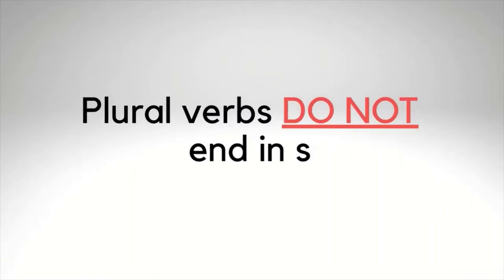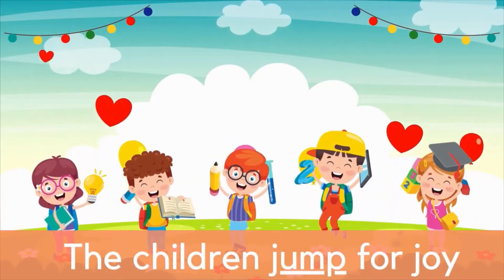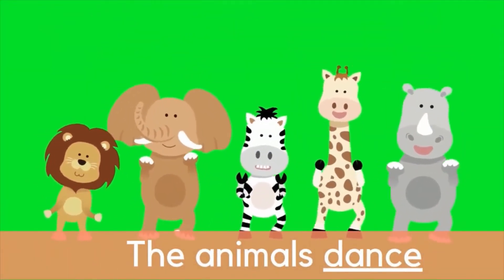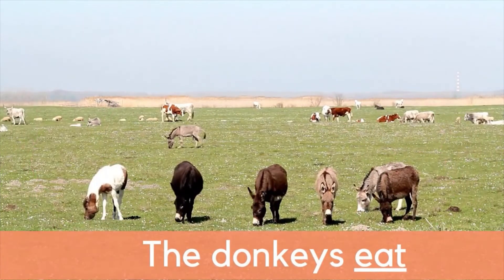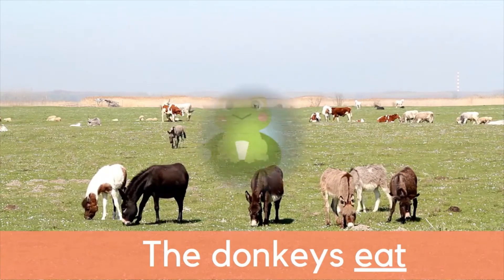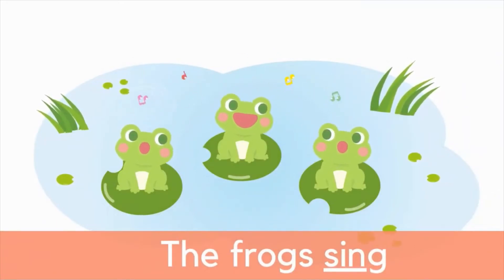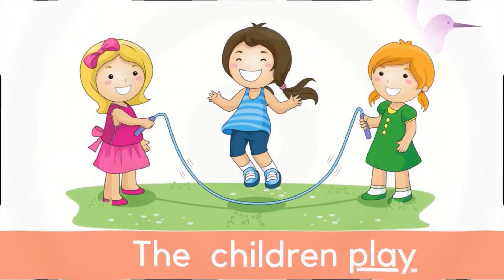Plural verbs do not end in S. Let's look at a few examples: the children jump for joy, the animals dance, the donkeys eat, the frogs sing, the birds fly, and the children play.